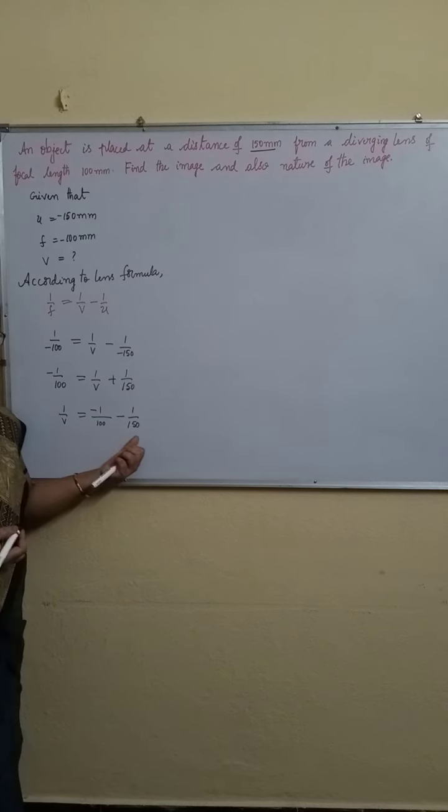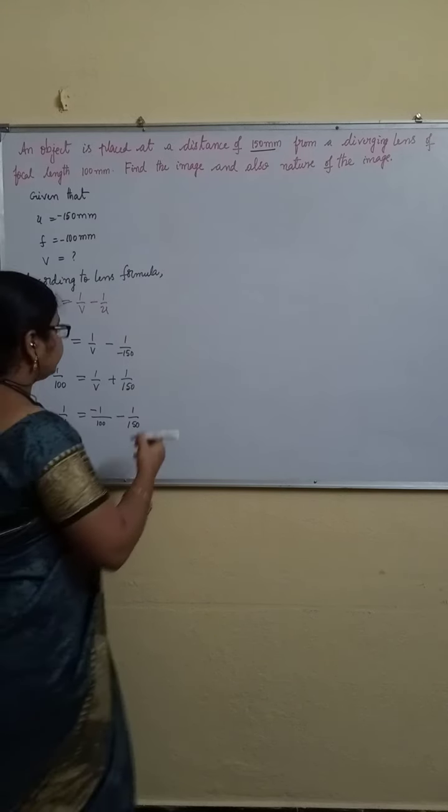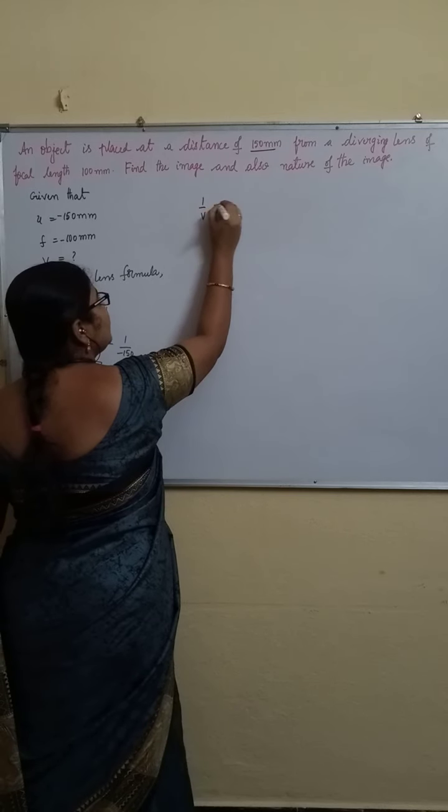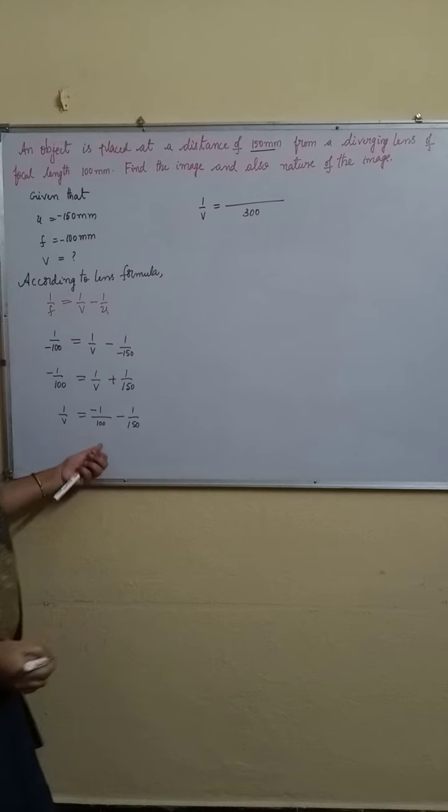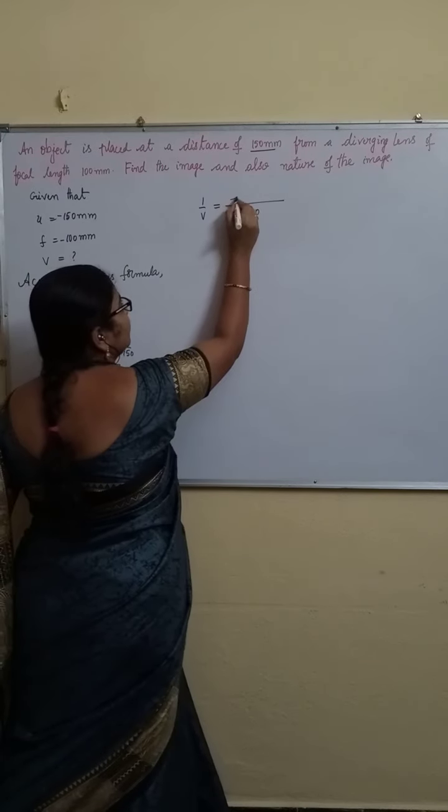Now 100, 150. What is the LCM? It is 300. 1 by V is equal to, LCM is 300. In 100 table, 300 will come for 3 times. 3 into minus 1, minus 3.